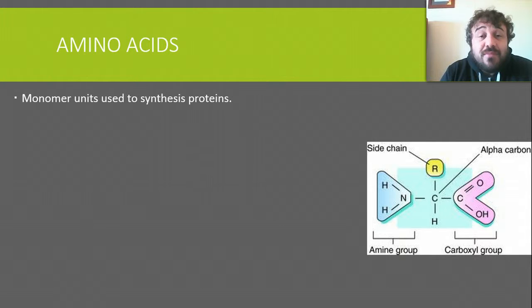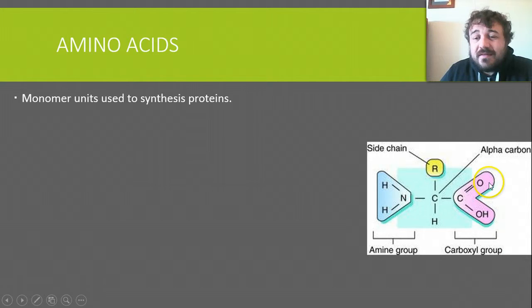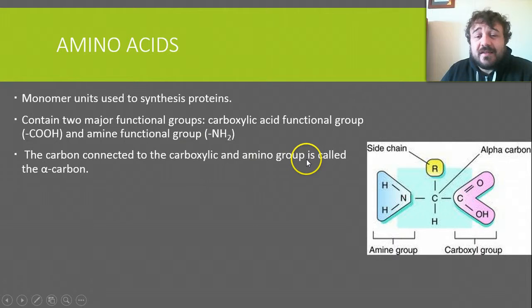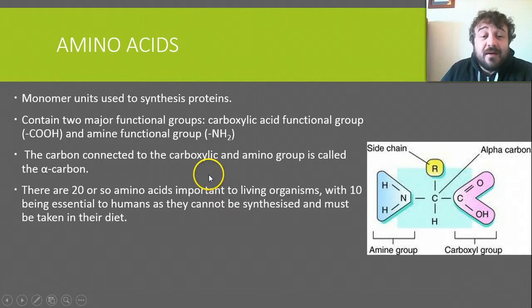So, what is an amino acid? It's the monomer that we use in proteins. They contain two functional groups: a carboxyl group (COOH) and an amine group (NH2). The carboxylic acid and the amine are joined to the alpha carbon, which is not counted as part of the side chain. The side chain extends off that.